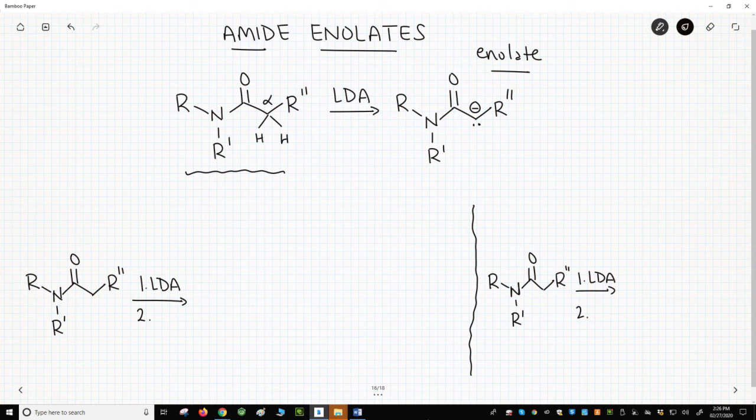Note that we haven't specified our R groups. In order to make an amide enolate, you cannot have hydrogens on the amide nitrogen. So those cannot equal hydrogens.